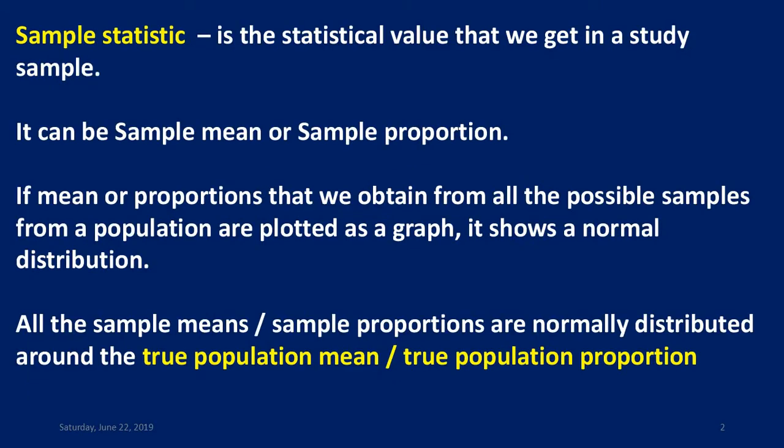Sample statistics is the statistical value that we get in a study sample. It can be sample mean or sample proportion. If mean or proportion obtained from all the possible samples from a population are plotted as a graph, all the means show a normal distribution. All the sample means or sample proportions are normally distributed around the true population mean or true population proportion.